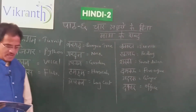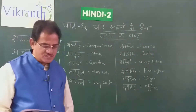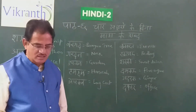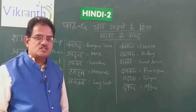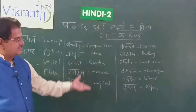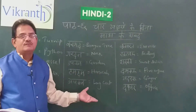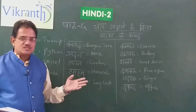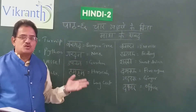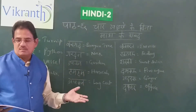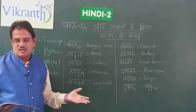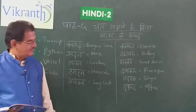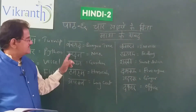Padho Aur Seekho — Read and Learn. There is a box there, children — you see that? Padho Aur Seekho. There also we find some words: four-letter words without symbols — Chaar Aksharon Ke Bina Matra Ke Shabda. OK, let us see them.